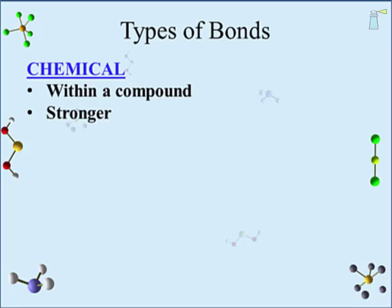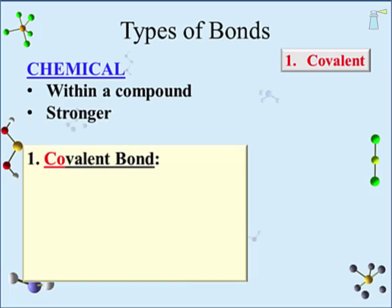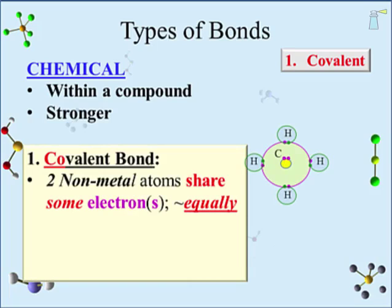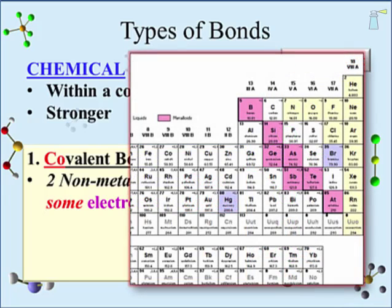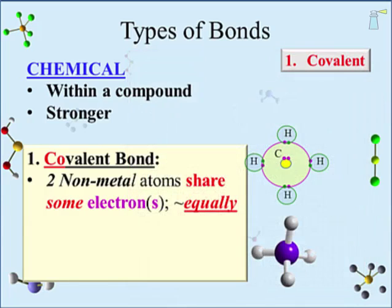Five types of chemical bonds will be introduced, beginning with the covalent bond. These occur between two non-metal atoms that share one or more of their electrons, and they do so more or less equally. Non-metals are located to the right of the staircase of elements on the periodic table — elements like nitrogen, oxygen, and chlorine. Covalent bond compounds are called molecules. Molecules are a subset of compounds — all molecules are compounds, but not all compounds are molecules.